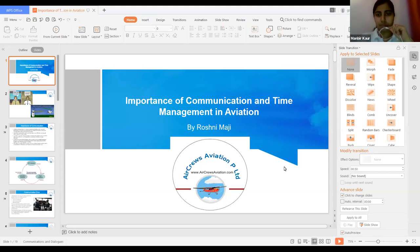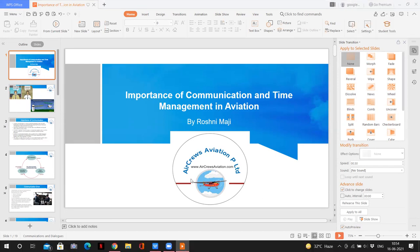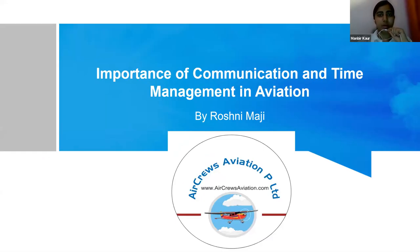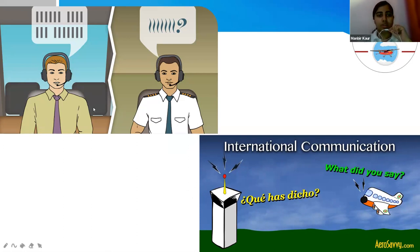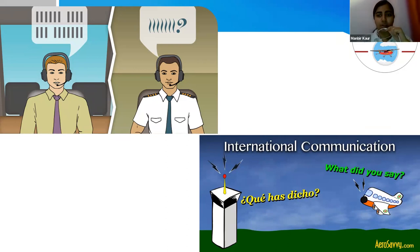Starting with today's presentation, we'll discuss the importance of communication as well as time management in aviation. Here we can see a few pictures which describe the communication barrier. The first picture shows an air traffic controller, and next to that we have the pilot. It is really necessary to have a one-to-one conversation. An ATC is a person who permits or allows an aircraft to take off as well as land, and also helps to communicate with the pilot for navigation and air traffic purposes.